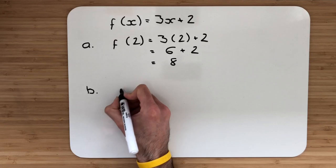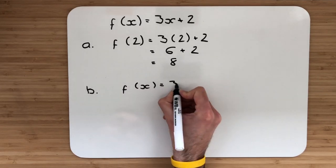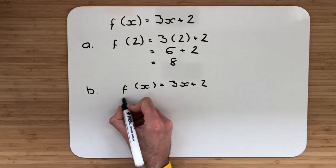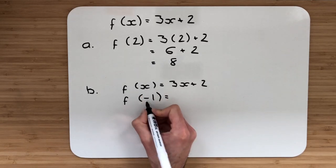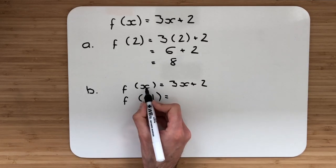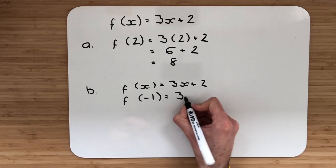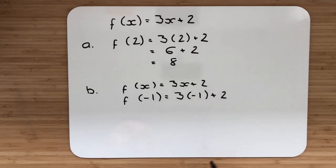Part b. Start with your function again. So f of x is equal to 3x add 2, and I want the value of f of negative 1. So I'm deliberately writing these above and below one another. Wherever there is an x, I will substitute in the number negative 1. So 3 multiplied by negative 1, adding 2.